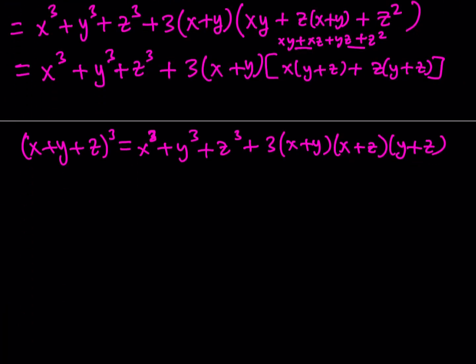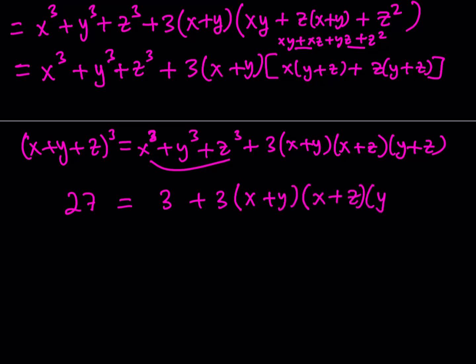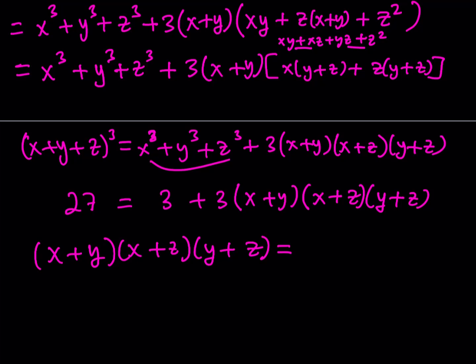We know x + y + z = 3, so the left side is 27. We also know x³ + y³ + z³ = 3. Substituting and solving: 27 = 3 + 3·(x + y)(x + z)(y + z), so (x + y)(x + z)(y + z) = 24/3 = 8. Great, that's what we wanted.